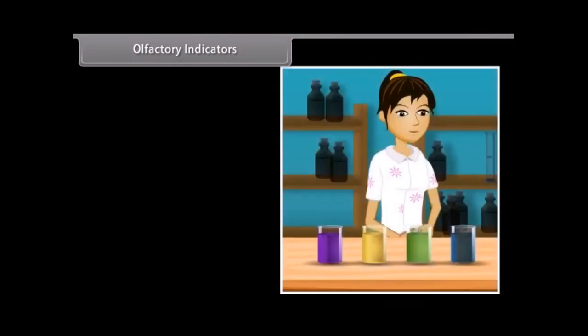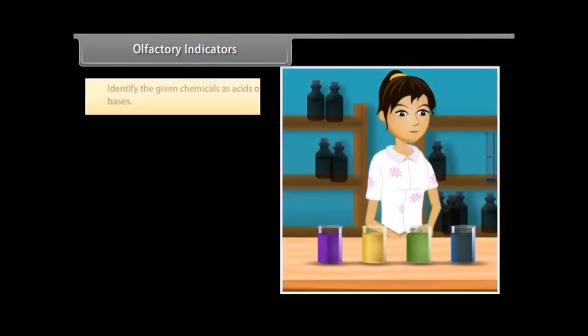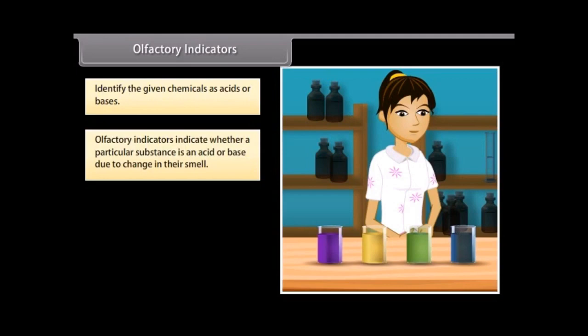Olfactory indicators. Suppose you are given four chemicals and asked to identify them as acids or bases. How will you do it? Let us find out. We have olfactory indicators which indicate whether a particular substance is an acid or base due to change in their smell. They are used in the laboratory to test whether a solution is a base or an acid by a process called olfactory titration.